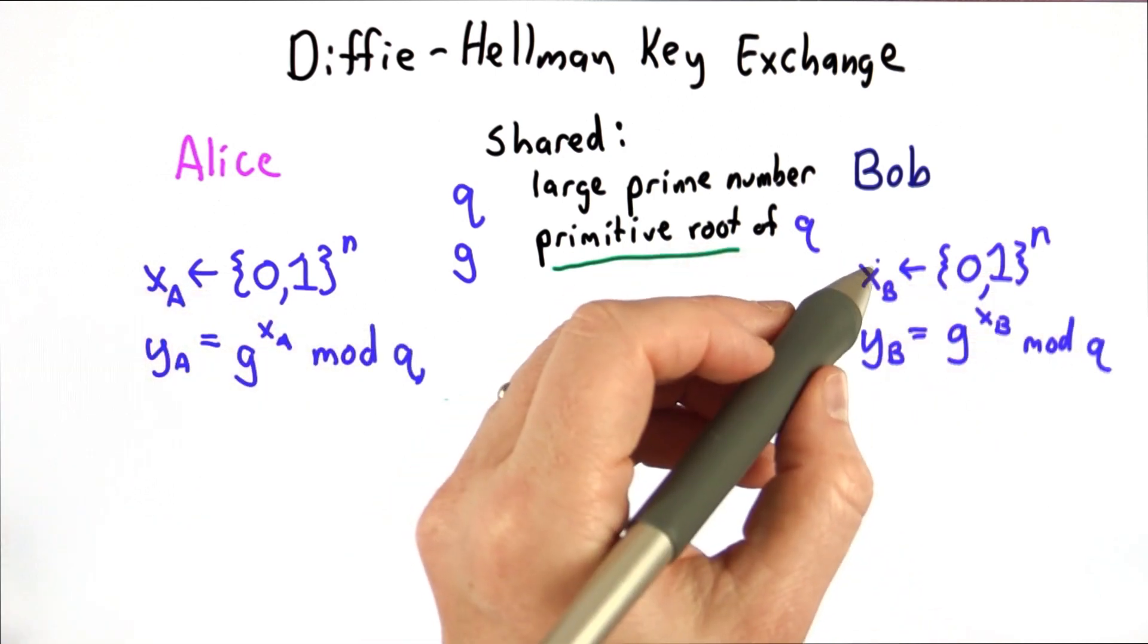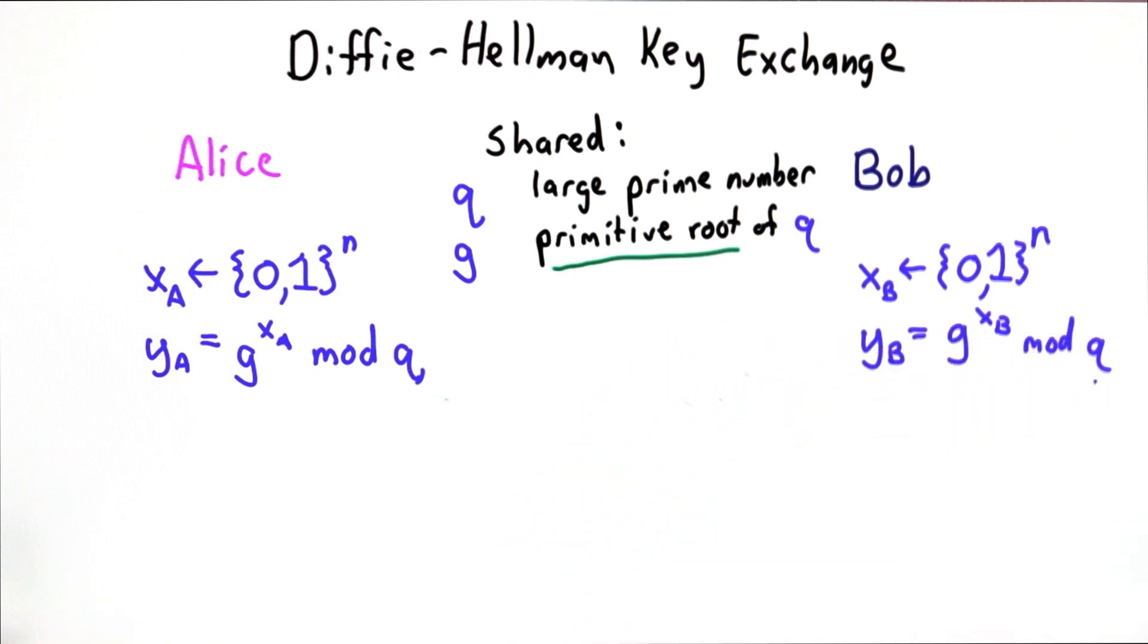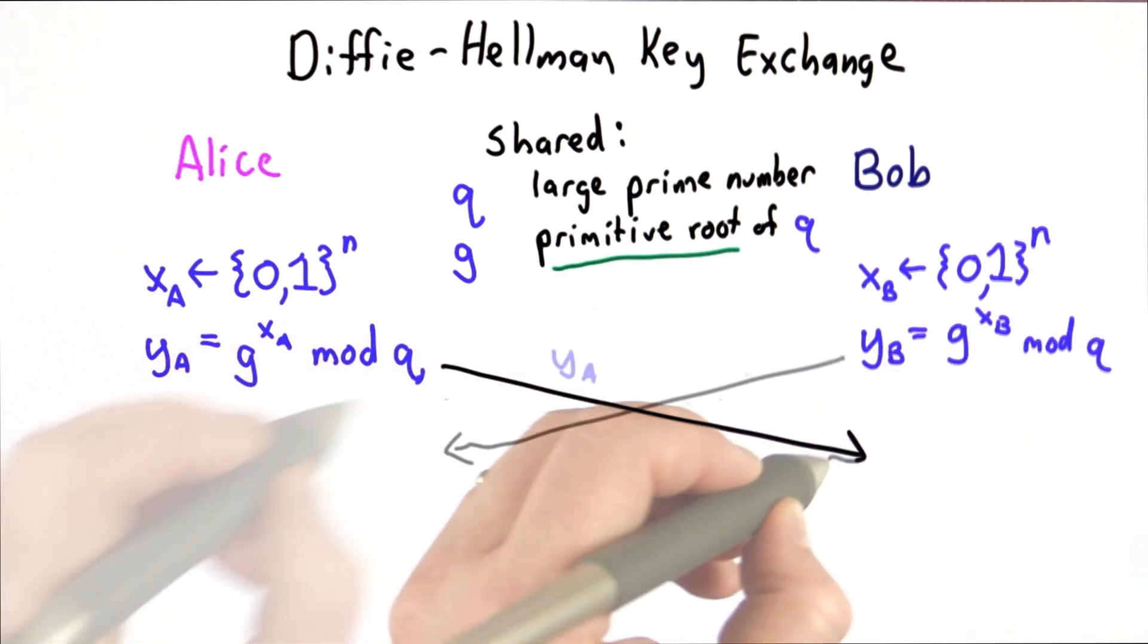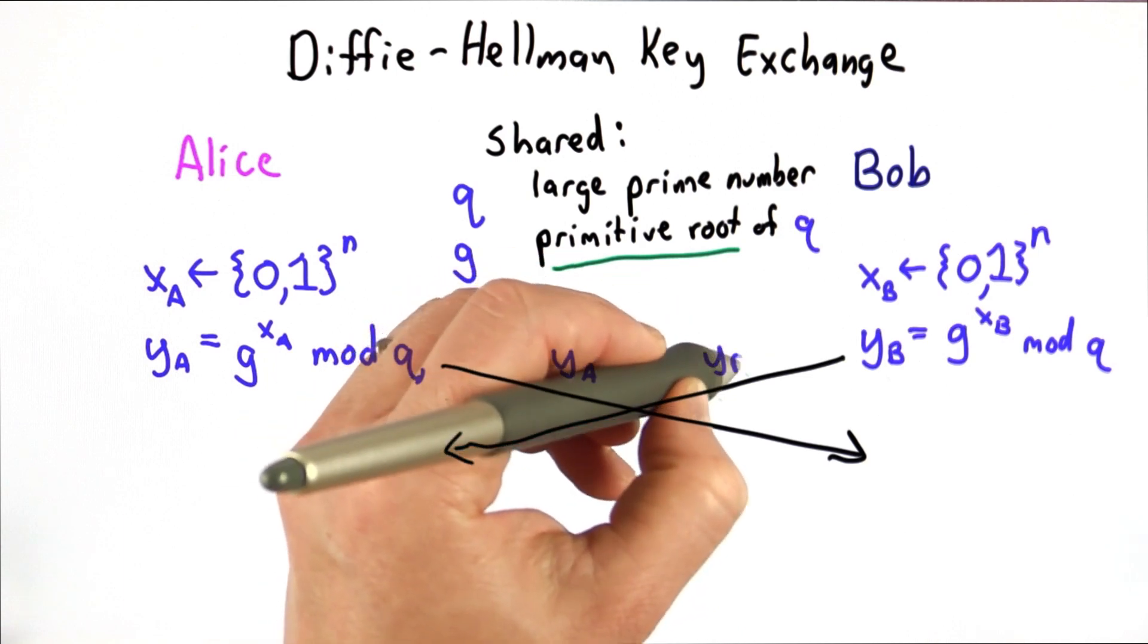Bob will do the same thing, but with his secret power xb, so he'll raise g to the xb power modulo q. They'll exchange these values, so Alice sends ya to Bob, Bob sends yb to Alice.